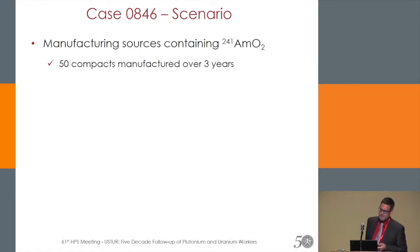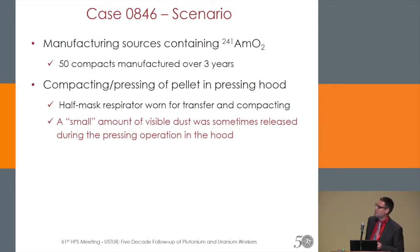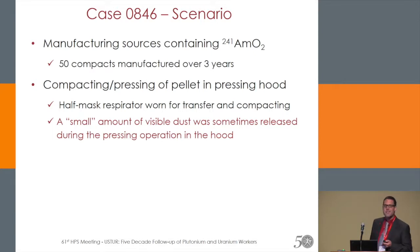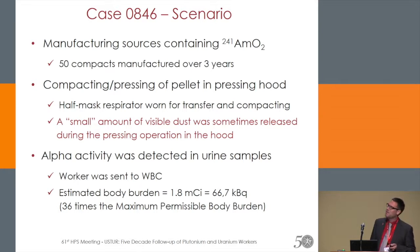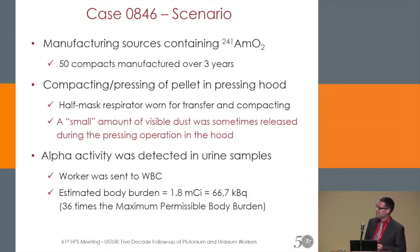Case 846 was a worker who manufactured sources containing americium oxide. He manufactured 50 of these sources in a time span of three years. One of the tasks was compacting and pressing of pellets in a pressing hood. He wore a half-mask respirator for transfer and compacting. A small amount of visible dust was sometimes released during the pressing operation in the hood. When low levels of alpha and beta-gamma activity were detected in urine samples, an inspector of the Atomic Energy Commission sent the worker to a whole body counter, and found 1.8 millicuries, or 66 kilobecquerels of americium body burden — 36 times the maximum permissible burden at that time.